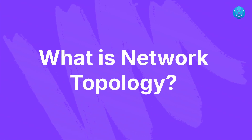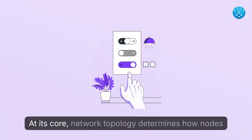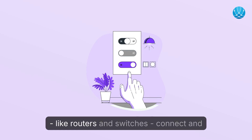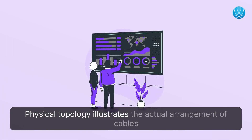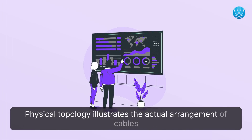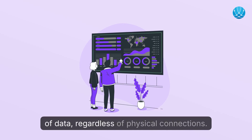What is network topology? At its core, network topology determines how nodes, like routers and switches, connect and how data flows between them. Physical topology illustrates the actual arrangement of cables and devices, while logical topology highlights the movement of data, regardless of physical connections.